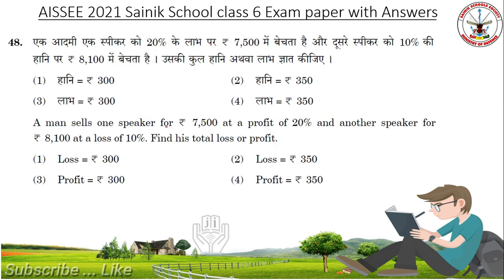A man sells one speaker for 7500 at a profit of 20% and another speaker for 8100 at a loss of 10%. Find his total loss or profit. Answer is Profit of 350.